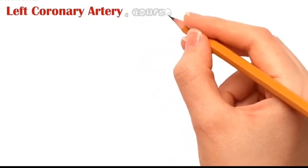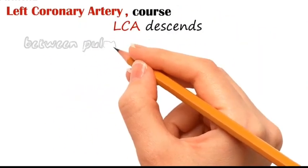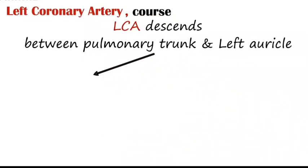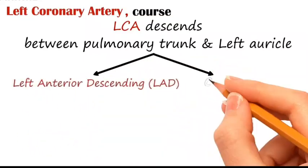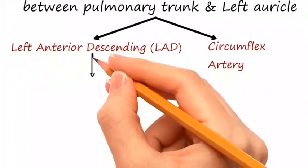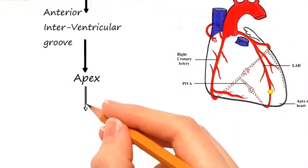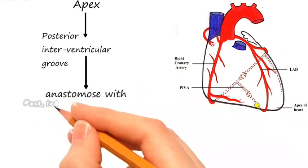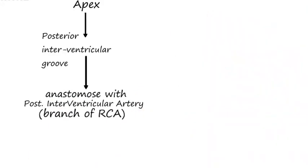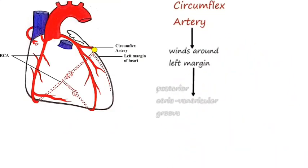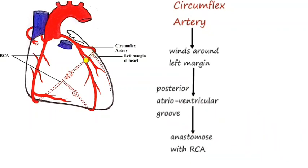We shall now learn the course of the left coronary artery. After its origin, it descends between the pulmonary trunk and the left auricle, then divides into the left anterior descending artery and the circumflex artery. The left anterior descending artery moves anteriorly along the interventricular groove, crosses the apex of the heart, moves posteriorly along the interventricular groove, and finally anastomoses with the posterior interventricular artery — a branch of the right coronary artery. The circumflex artery winds around the left margin of the heart, moves posteriorly along the atrioventricular groove, and finally anastomoses with the right coronary artery.